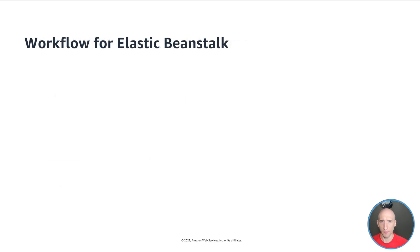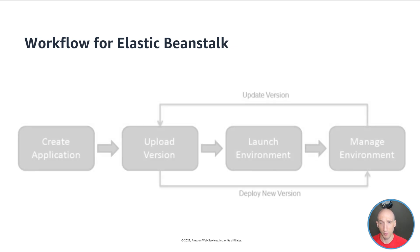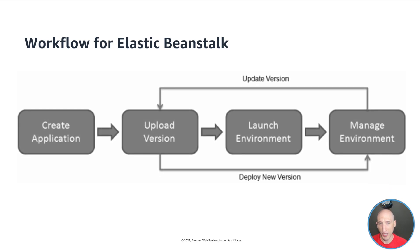Now let's talk about the workflow for Elastic Beanstalk. To use Elastic Beanstalk, you create an application — you can do that a handful of ways. You then upload that application version in the form of an application source bundle, like a published directory from the .NET CLI, to Elastic Beanstalk, and provide some information about that application. Elastic Beanstalk automatically launches an environment and creates and configures the AWS resources needed to run your code. After your environment is launched, you can then manage your environment and deploy new application versions.